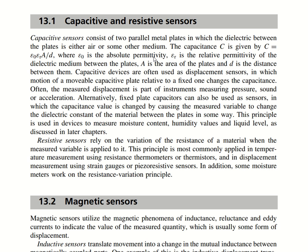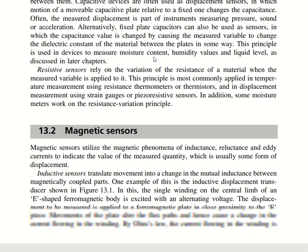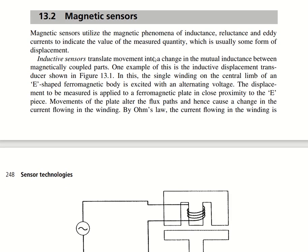Resistive sensors rely on variation of the resistance of a material when the measured variable is applied to it. This principle is most commonly applied in temperature measurement using resistance thermometers or thermistors — note that thermometers and thermistors are different sensors. Resistive sensors are also used in displacement measurement with strain gauges or piezoelectric sensors.